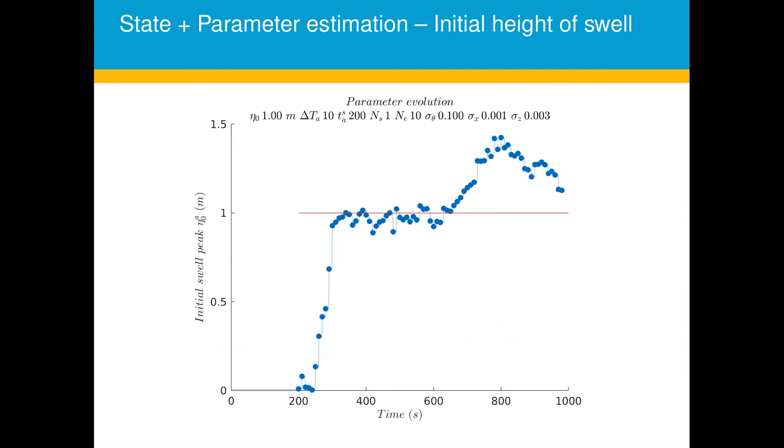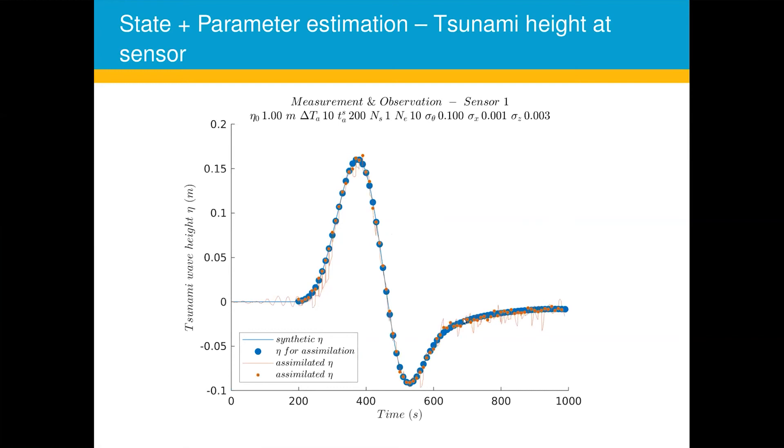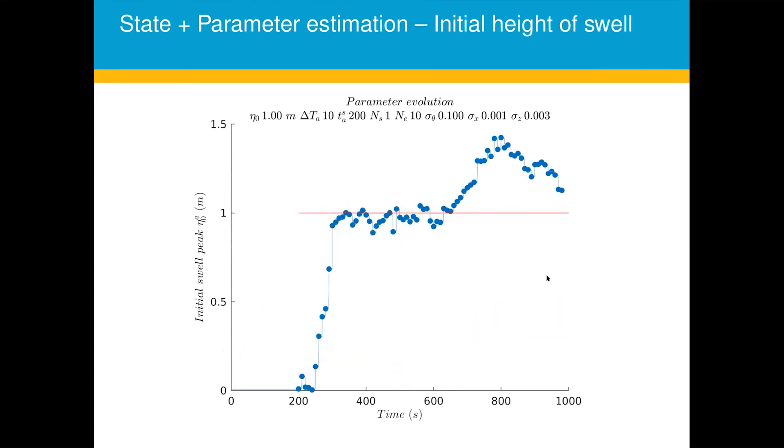And this is the parameter. So the parameter was chosen, the initial peak of the tsunami swell was chosen as one meter. And in the initial assimilation instances, the wave hits the sensor at around 200 seconds. And when the assimilation kicks in, the parameter slowly evolves and hits the value of one and remains steady there. And after some time it kind of develops a lot of error. We have to solve this problem, but I think it is not a big issue. This is basically to do with after 620 seconds where you have very flat curves, so there's no much change in the observations. And that's where the parameter kind of fluctuates a little.